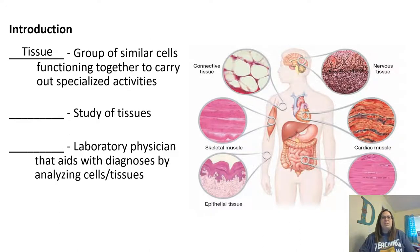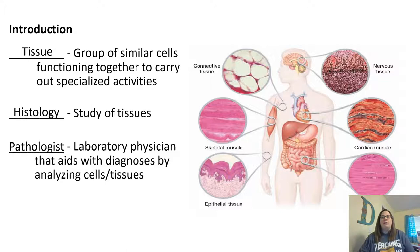A tissue is a group of similar cells functioning together to carry out specialized activities. We talked about in chapter three about how cells work, and now we're moving up where there's a group of cells working together to make a tissue. The study of tissues is called histology. Pathologists are the laboratory physicians who help look at cells and tissues and diagnose — for example, when biopsies are done for cancer or tumors, it goes to the pathologist to determine if the cells and tissues look like they should.